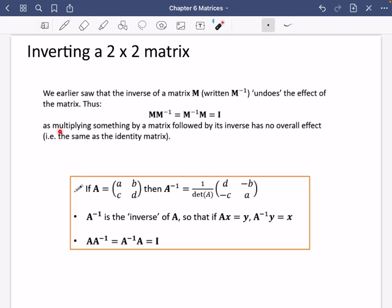And what I've written here, multiplying something by a matrix followed by its inverse has no overall effect, i.e. the same as the identity matrix. So if you took the matrix A, you multiplied it by something to transform it to a new point, you multiplied it by its inverse, that would take it back to its original point. So that's just the same thing as taking the original matrix A and multiplying it by the identity.